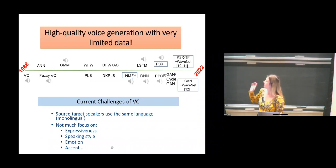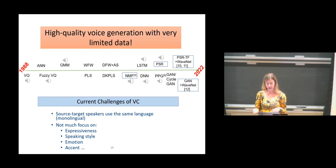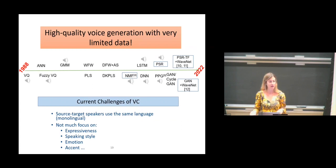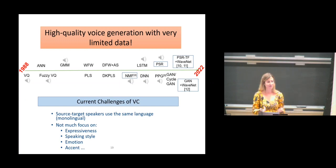We have gone through some historical aspects of voice conversion and popular methods. I want to look at current challenges and future directions. One current challenge is that many voice conversion frameworks in Interspeech, ICASSP, TASLP, or other speech journals mostly work on monolingual cases — both speakers are generally speaking the same language, like English or Mandarin. Building models that can work for cross-lingual applications is definitely important because there are so many languages in the world and we cannot obtain bilingual data.